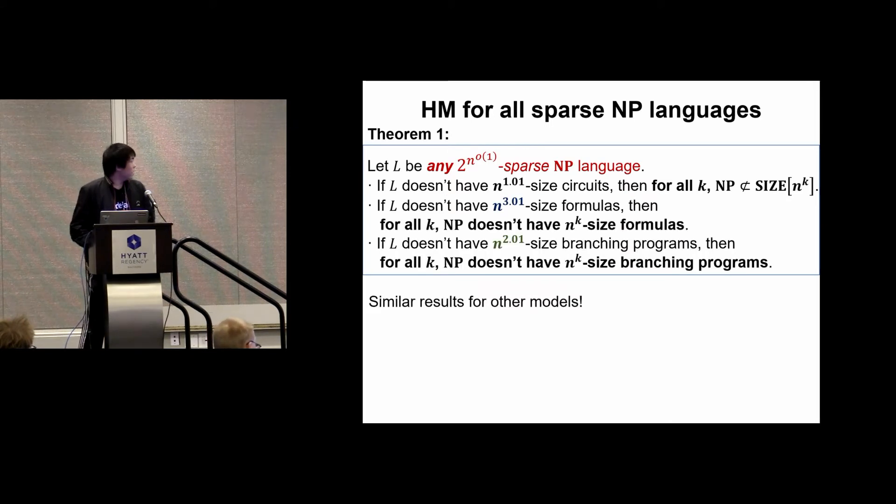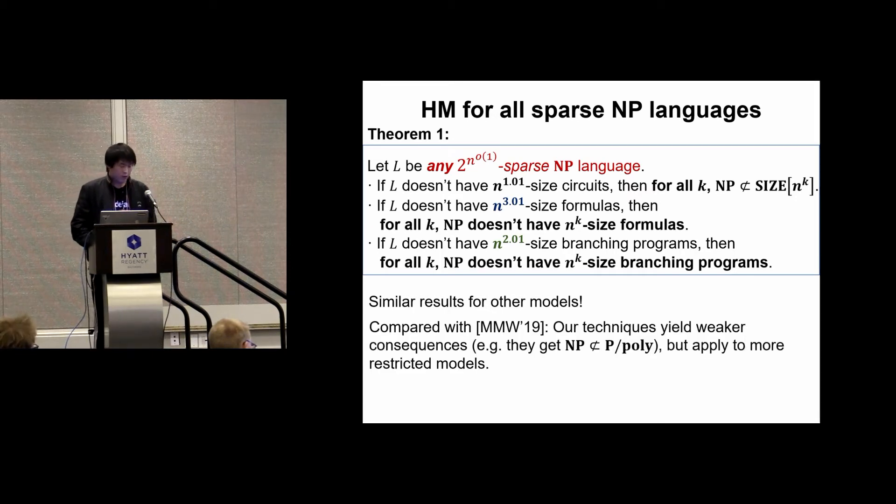We also have similar results for other computational models. For example, for formulas, the required lower bound is n^3.01. And for branching programs, we require n^2.01.